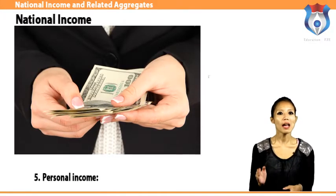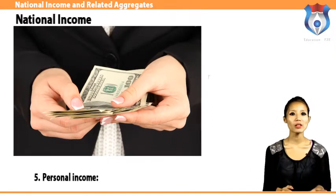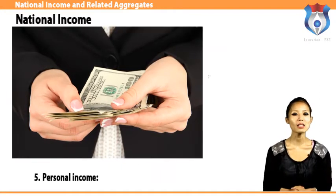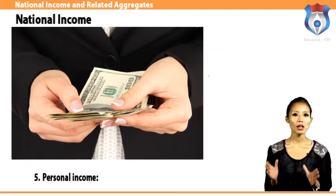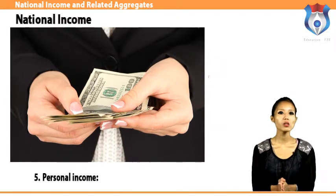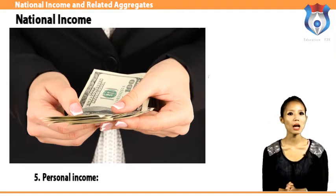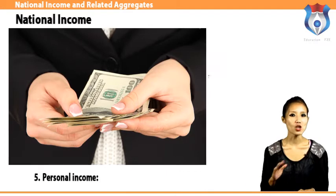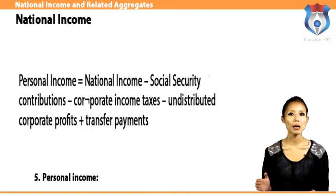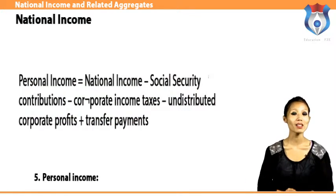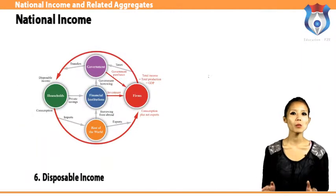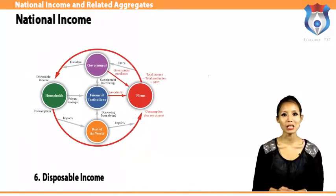Personal income is the sum of all incomes actually received by all individuals or households during a given year. In national income, some income is earned but not actually received by households — such as social security contributions, corporate income taxes, and undistributed profits. On the other hand, there are transfer payments received but not currently earned — such as old age pensions, unemployment benefits, relief payments, etc. Personal income equals national income minus social security contributions minus corporate income taxes minus undistributed corporate profits plus transfer payments.